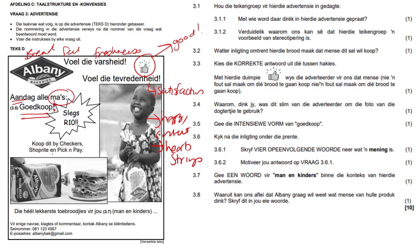Available at Checkers, Shop Right and Pick and Pay — so this is where you can get the bread. Then they have a nice little sandwich picture. And then there are the contact details — so this is where you can take action. For enige navra, klachters of commentaars — any questions, complaints, comments — please contact Albany's client services. They give their cell phone number and their email address.